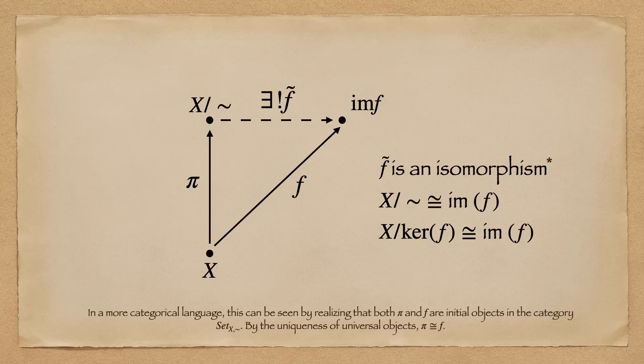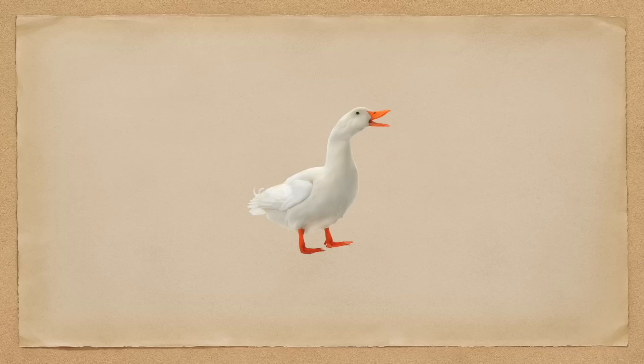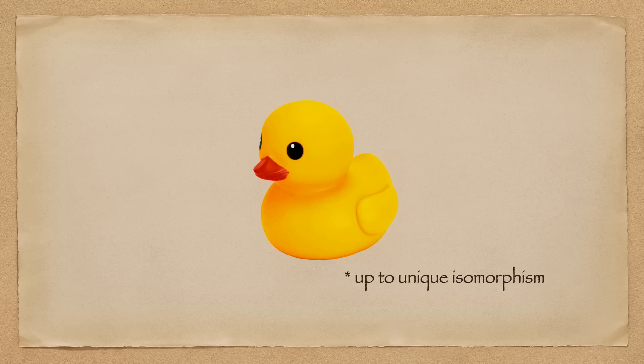And essentially, universal properties state that if it walks like a duck and quacks like a duck, then it must be a unique duck, up to unique isomorphism, of course. And this is immensely helpful. In fact, many objects are defined by their universal properties.